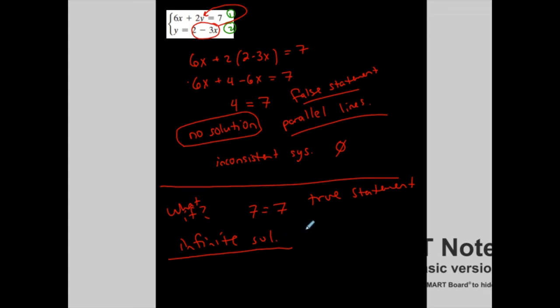Infinite solutions—every point on one satisfies the other. Sometimes what we do is represent the ordered pair in terms of a single variable. In this case, I represent the ordered pair in terms of x.